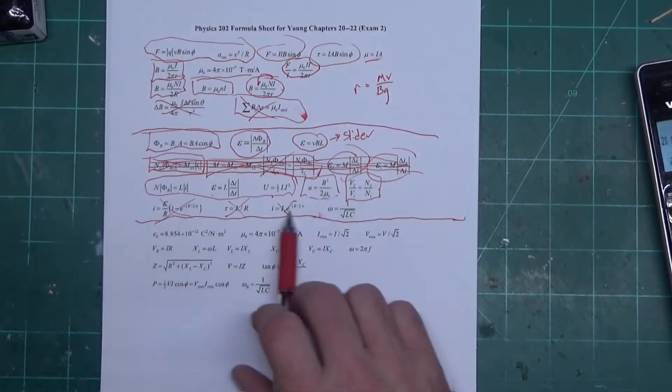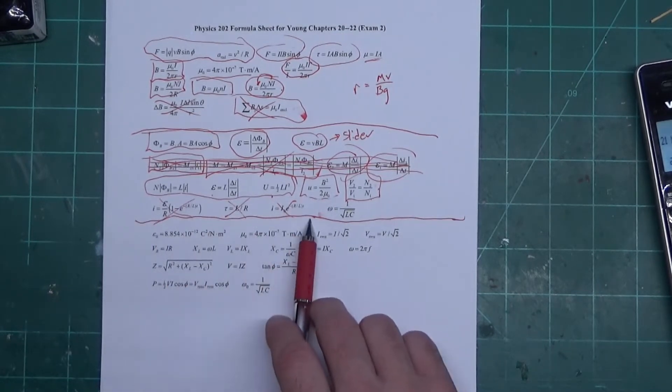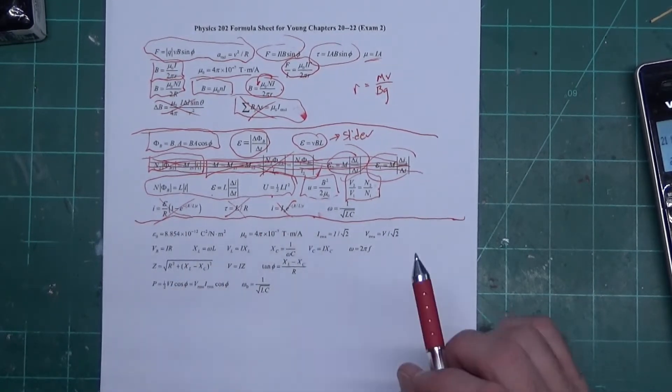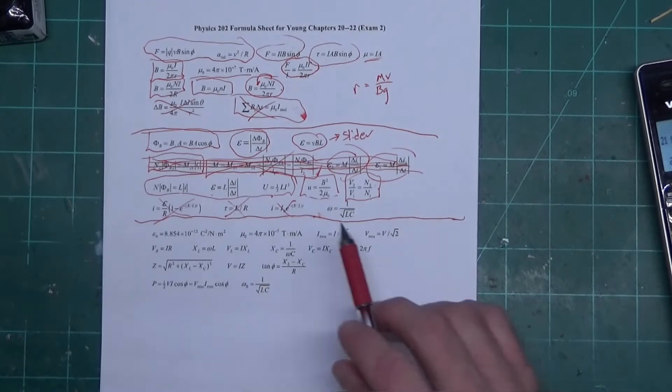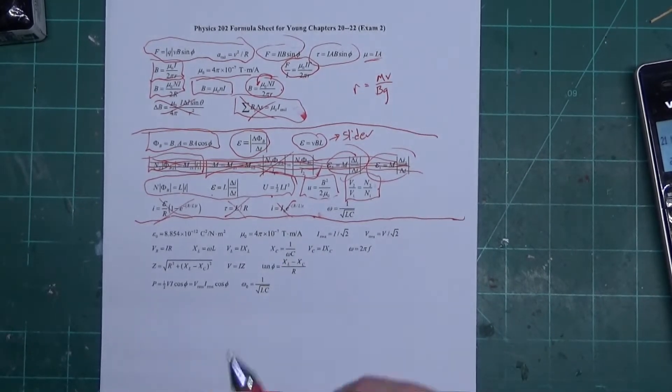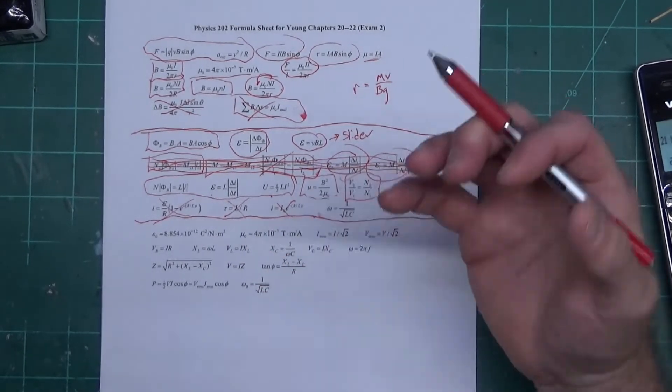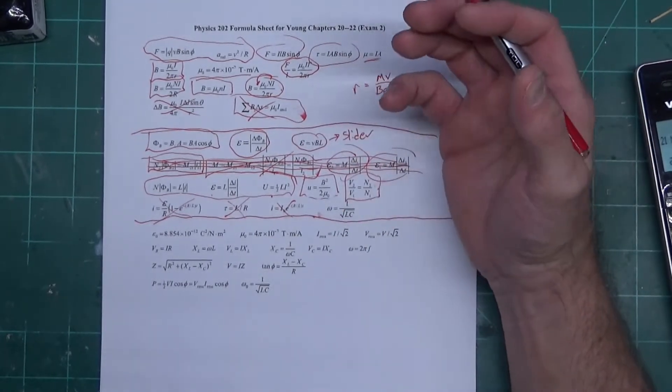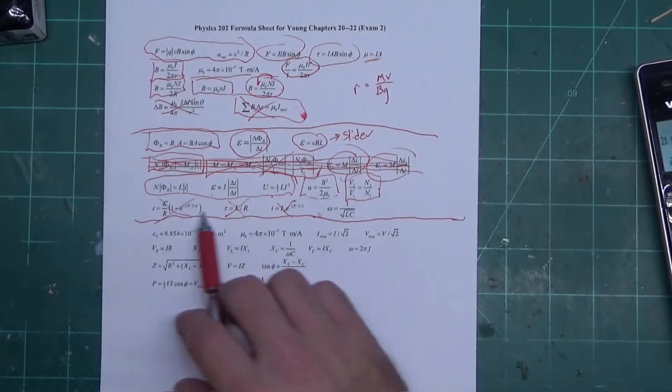He does, in fact - these three right here we don't use at all. These three right here are used for our RL circuits, inductor-resistor circuits. While he does put those on a test, they're 90% theory based, they're not this, so we don't use those.